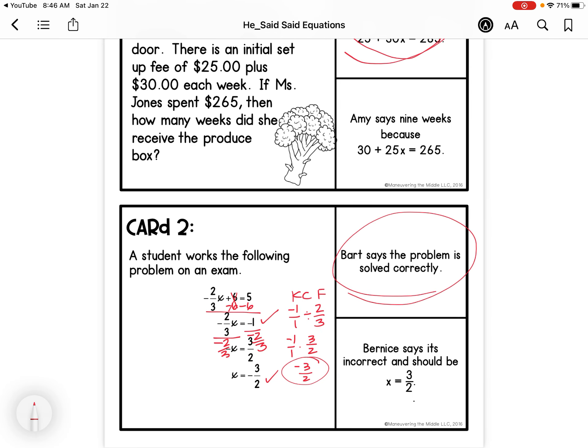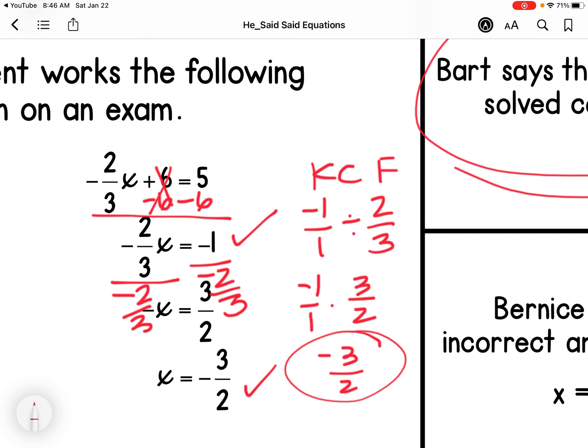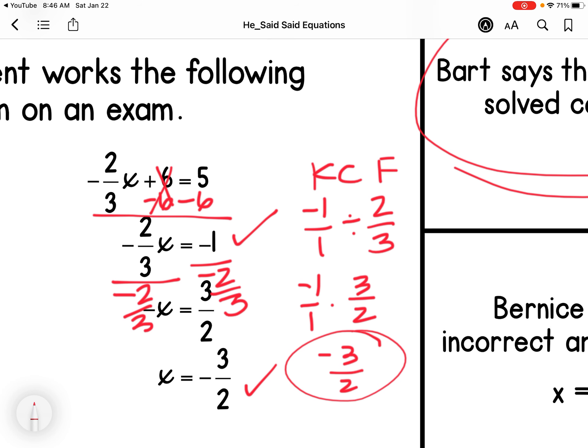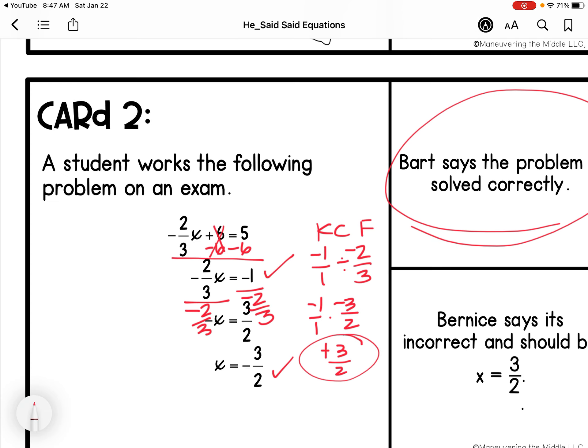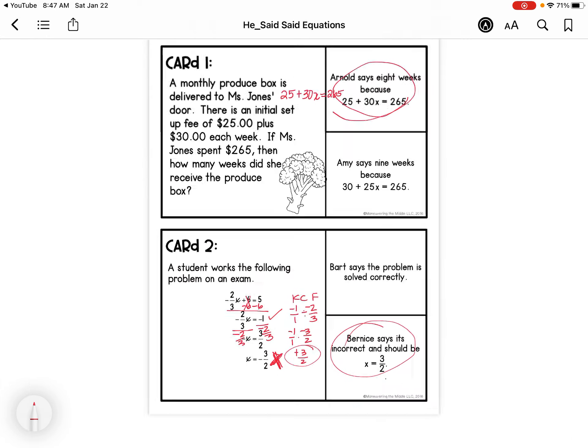Bernice forgot that there should be a negative sign because, oh wait. I dropped my negative sign on my second one. So it should be positive. So I solved it incorrectly. Bernice says it should be three halves and she's right because I dropped my negative sign. It should be three halves positive because signs are the same.